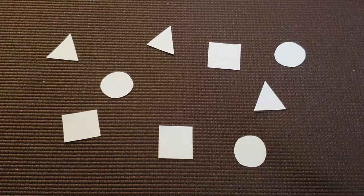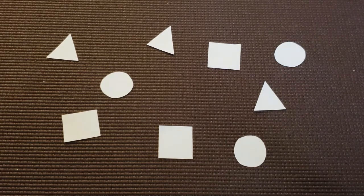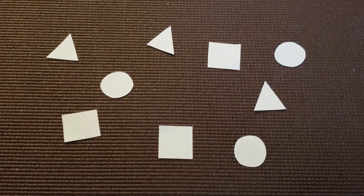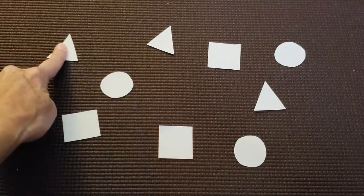When a child has learned some basic shapes, you can help deepen that understanding by doing a sorting activity. So you could cut some shapes out of paper. You can see I cut out a square, a circle, and a triangle.